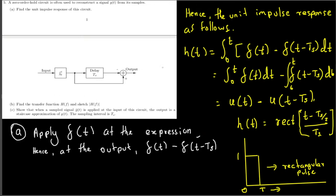That completes Part A. For Part B, the question asks us to find the transfer function H(f) and sketch the absolute value |H(f)|. Since we have h(t), we apply the Fourier transform to obtain H(f).